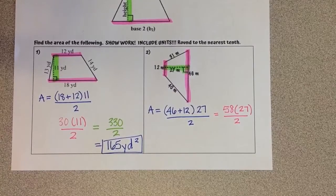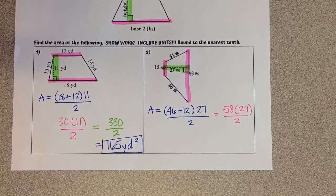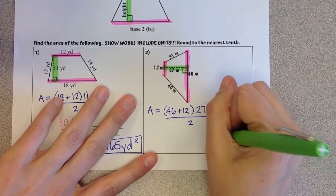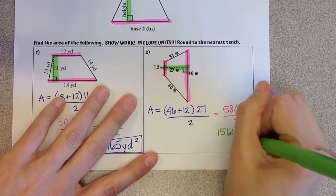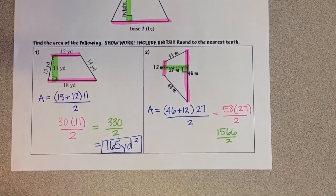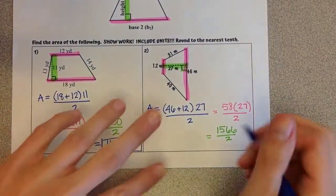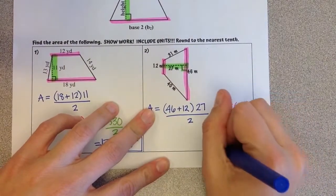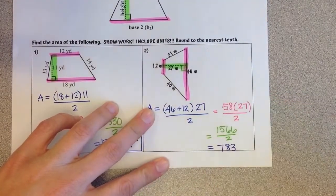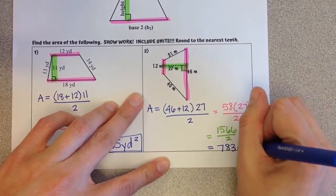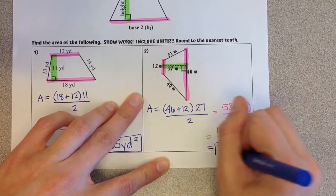I'm going to multiply before I divide here. 58 times 27 is 1566, divided by 2, gives us a final answer of 783. We're talking about meters for our units and it's area, so our units are always squared.